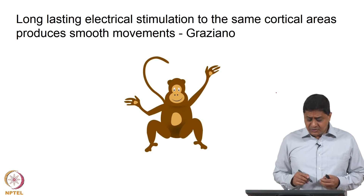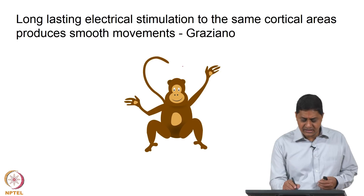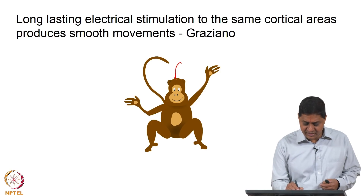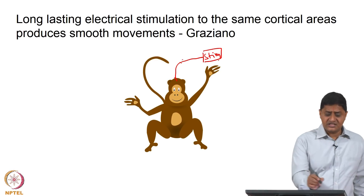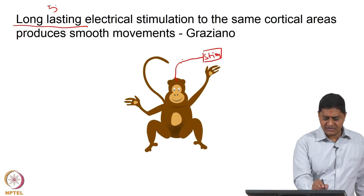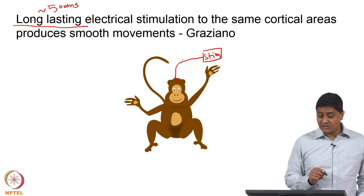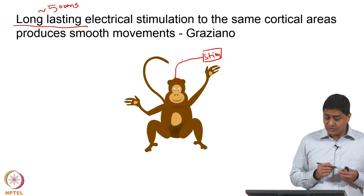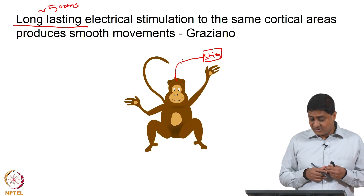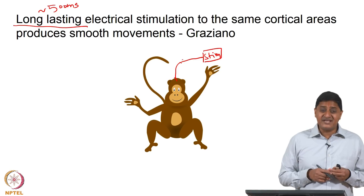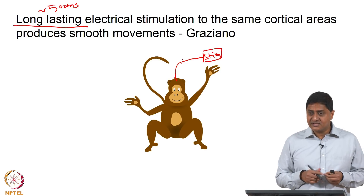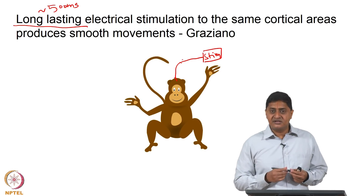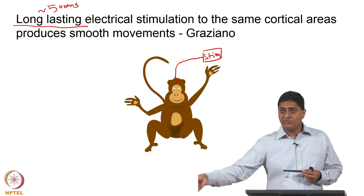Suppose there is a monkey with implanted electrodes in the primary motor cortex that is being stimulated. This stimulation lasts for relatively long periods of time — about 500 milliseconds, much longer than the classical approach. Depending on which area you are stimulating, the monkey responds in different fashions. In some cases, the response is a hand-to-mouth movement.